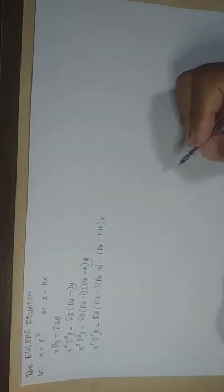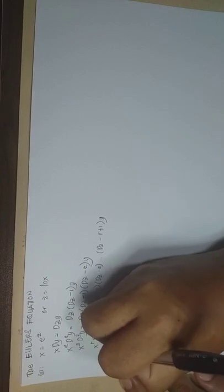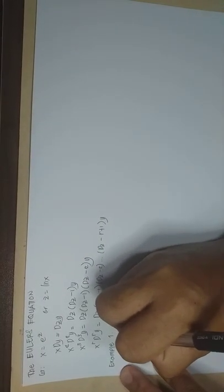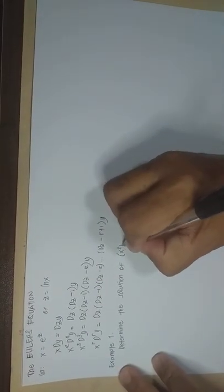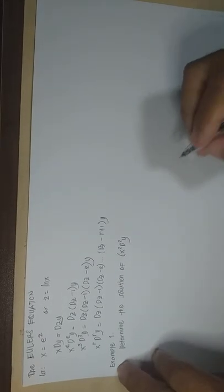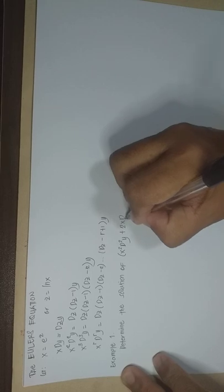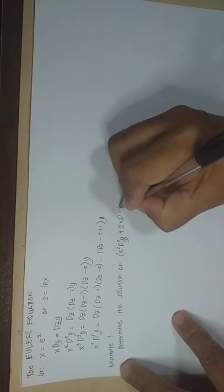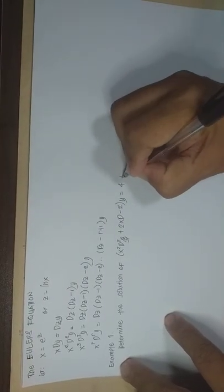That will be the general formula. Let us answer Example number one: determine the solution of x²D²y + 2x(Dy − 2y) = 4 + x².